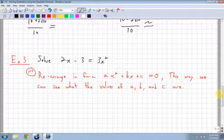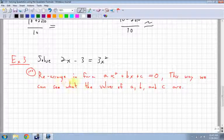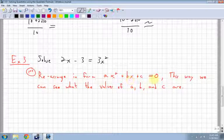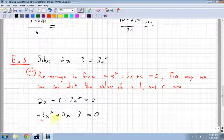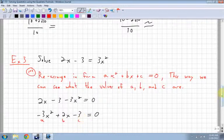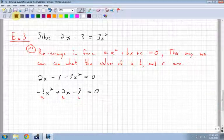Last one, example three. So it says solve 2x minus 3 equals 3x squared. First thing we want to do is rearrange in the form ax squared plus bx plus c equals 0, with my squared term first, my x term second, and my number last. So I move the 3x squared over. I get 2x minus 3 minus 3x squared equals 0. Notice when I bring the 3x squared over, it becomes negative. I usually like to put my x squared term first, then plus 2x and minus 3 equals 0, so you know what your a value, your b value, and your c value are.